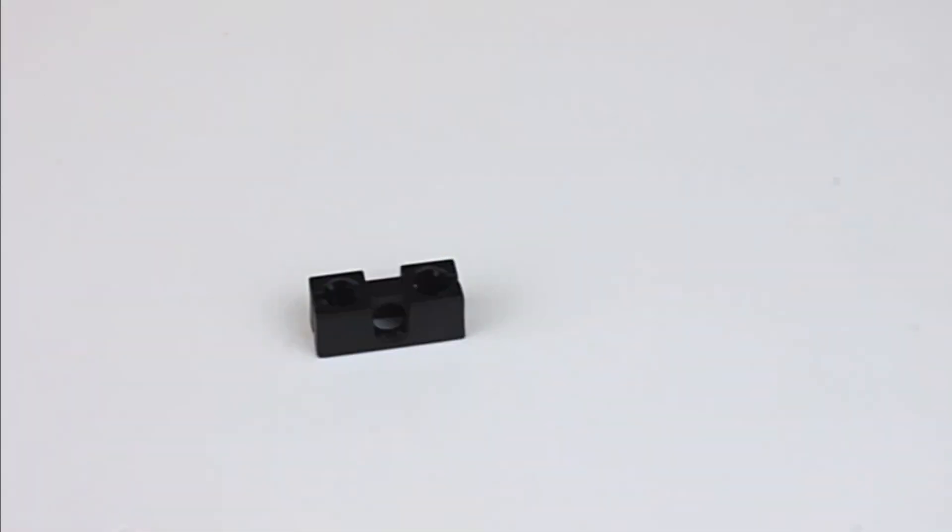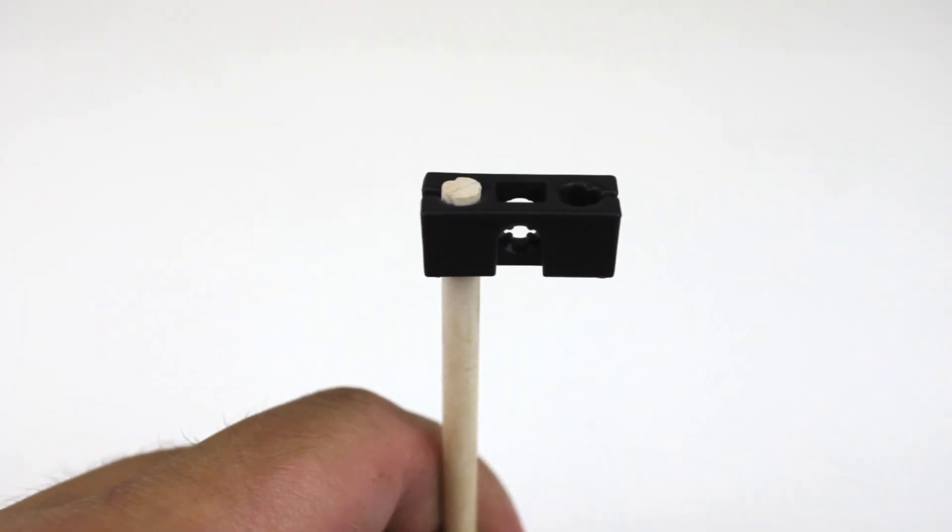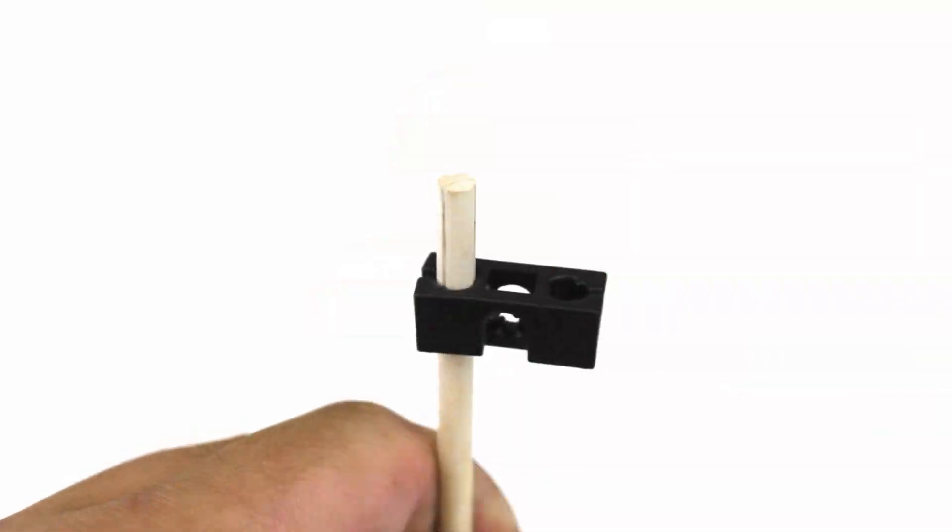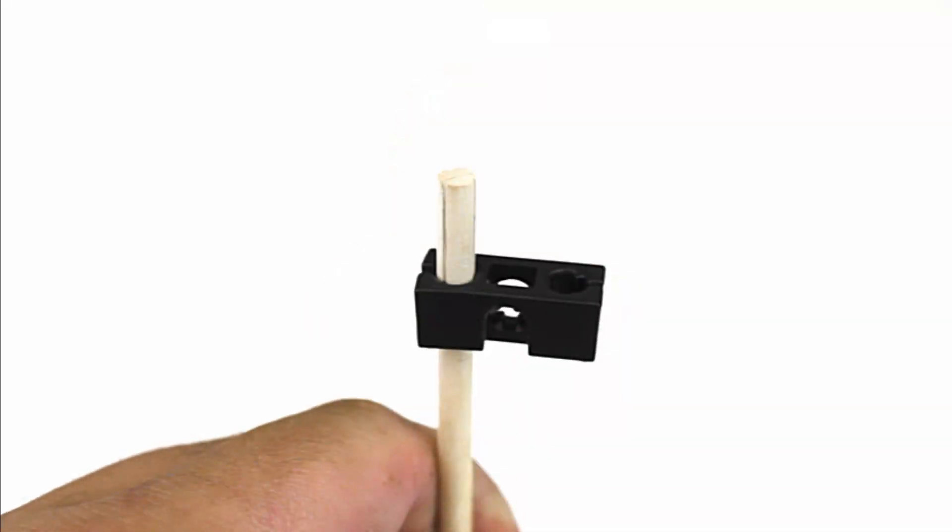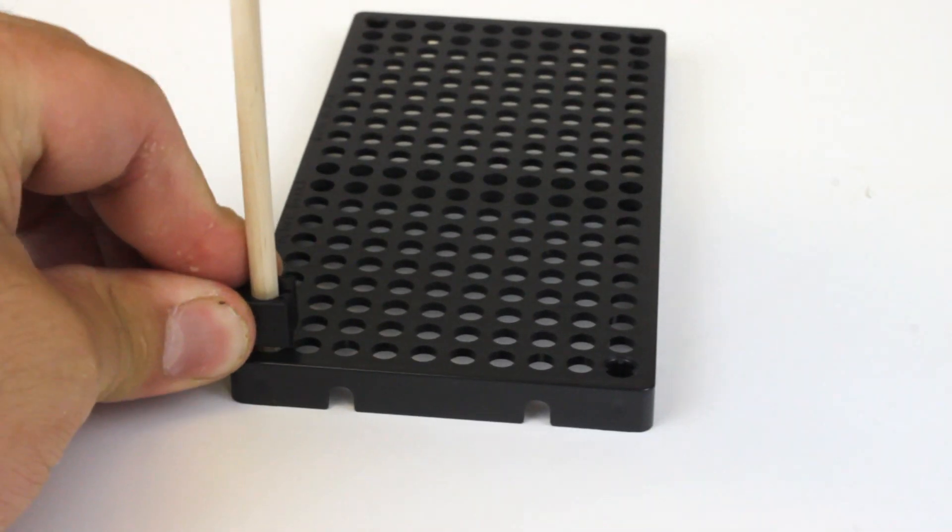Take one of your cut dowels and place it into a perpendicular block. Then slide your perpendicular block down 10 millimeters, which is about 3 eighths of an inch. Then take your dowel with the perpendicular block and slide it into the corner hole of the hole plate.